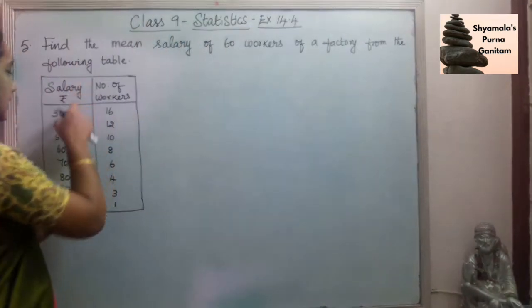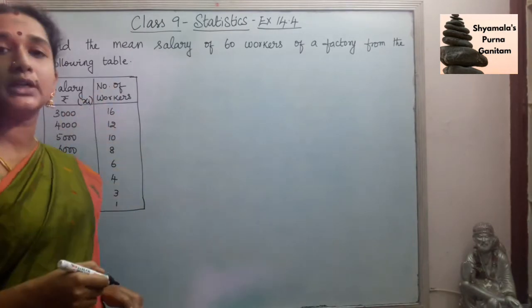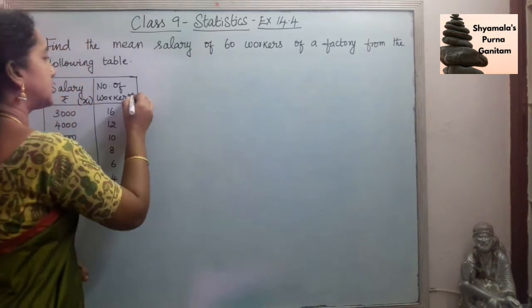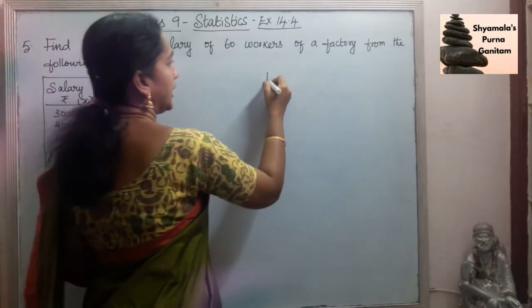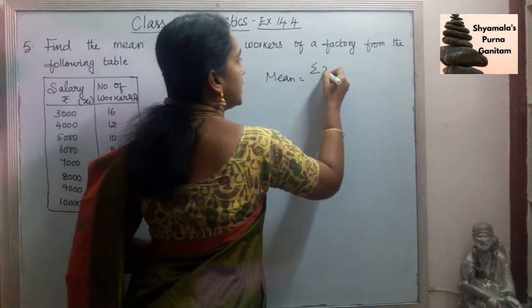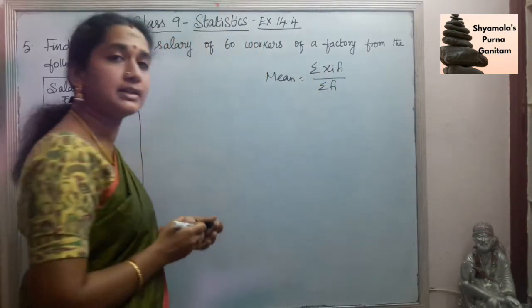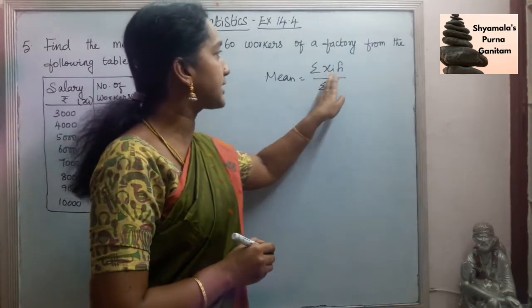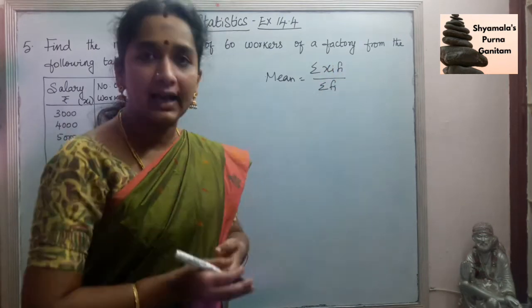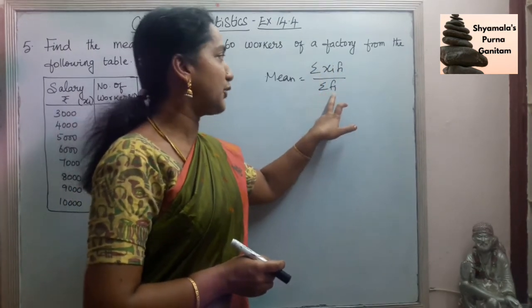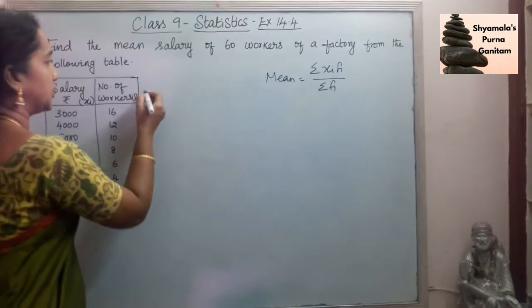In this data, the salary column we will take as Xi, and the number of workers is the frequency, so this is Fi. For finding the mean salary, the formula is Sigma XiFi divided by Sigma Fi. Sigma is nothing but the sum — sum of the products of Xi and Fi forms the numerator, and the sum of the frequency is the denominator, that is Sigma Fi.